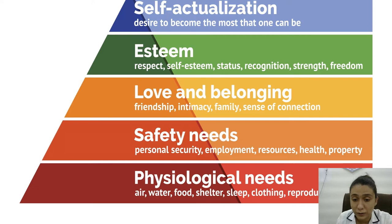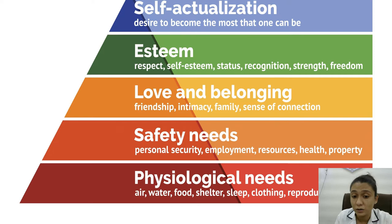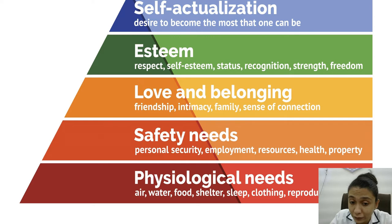Maslow's hierarchy pyramid has five levels: first, physiological needs; second, safety needs; third, love and belonging; fourth, esteem; and fifth, self-actualization. Physiological needs — food, water, and shelter — are the most basic needs. We must fulfill physiological needs first, as a priority, before addressing other needs.